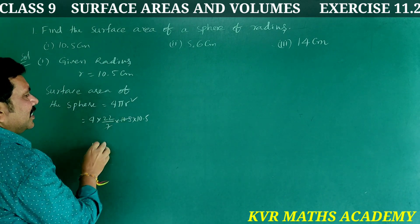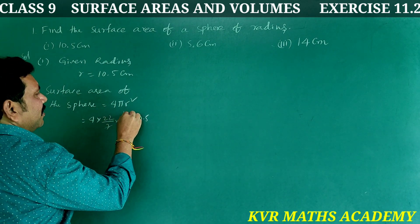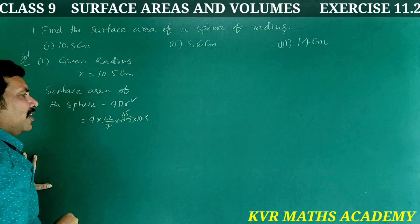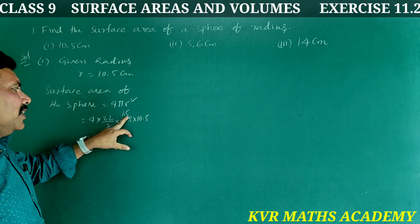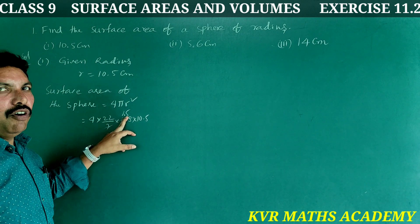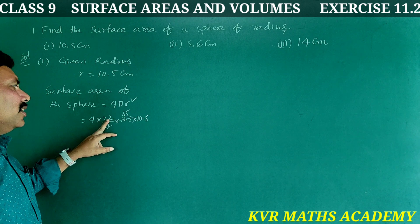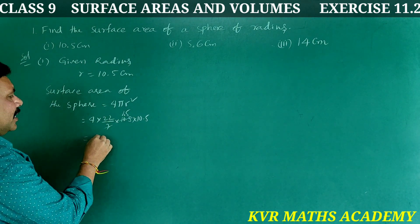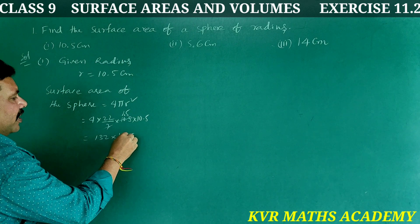7 cancels: 7 goes into 10.5 giving 1.5. So we get 4 × 22 × 1.5 × 1.5. 4 × 1.5 = 6. 6 × 22 = 132. Then 132 × 10.5.